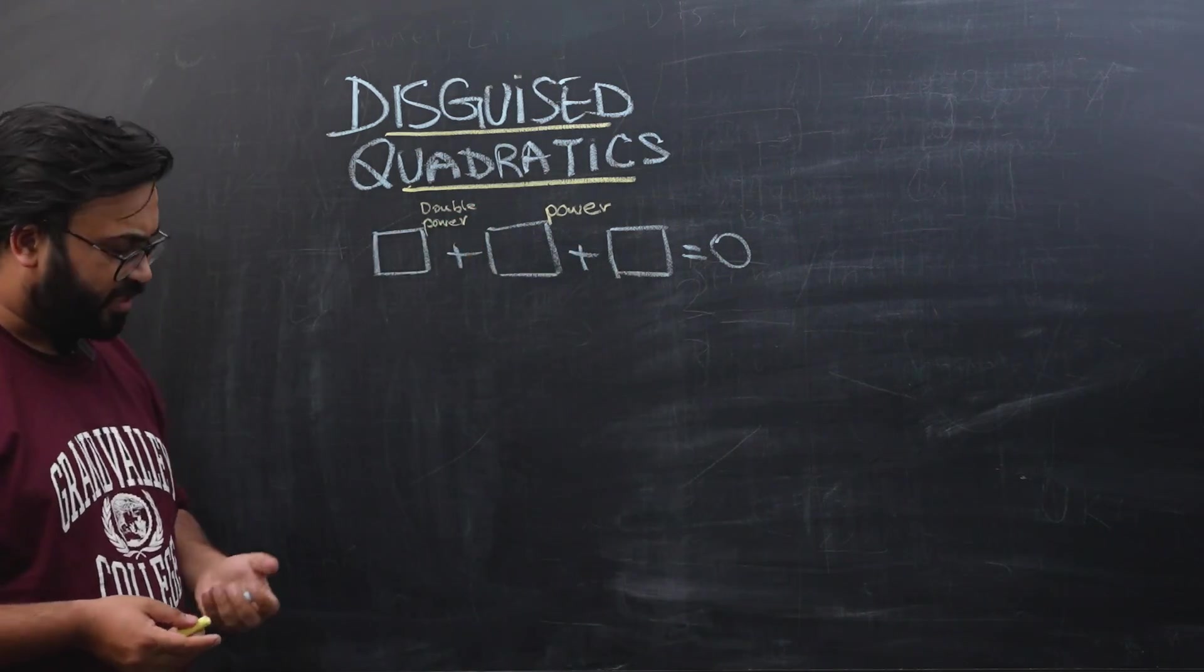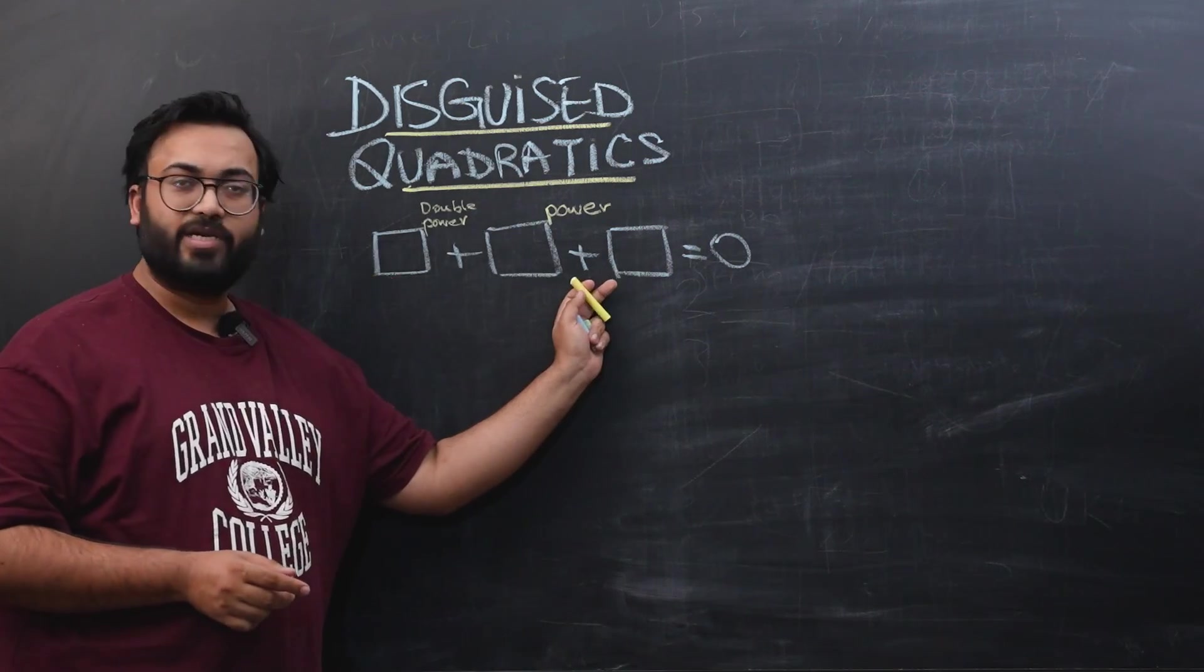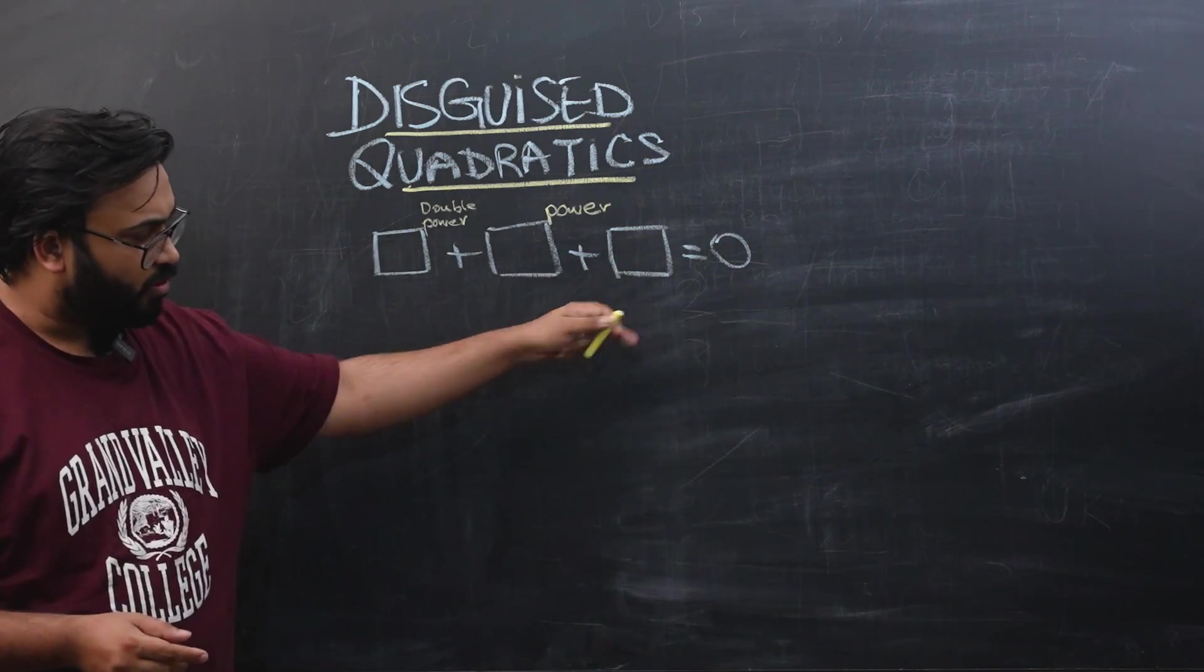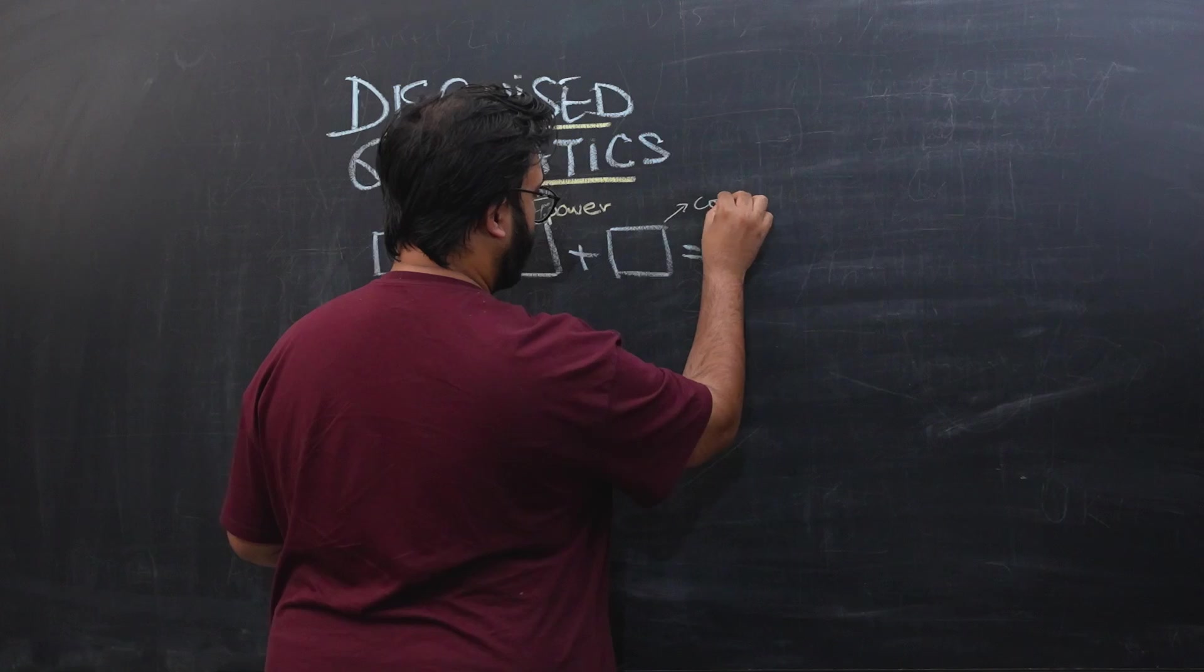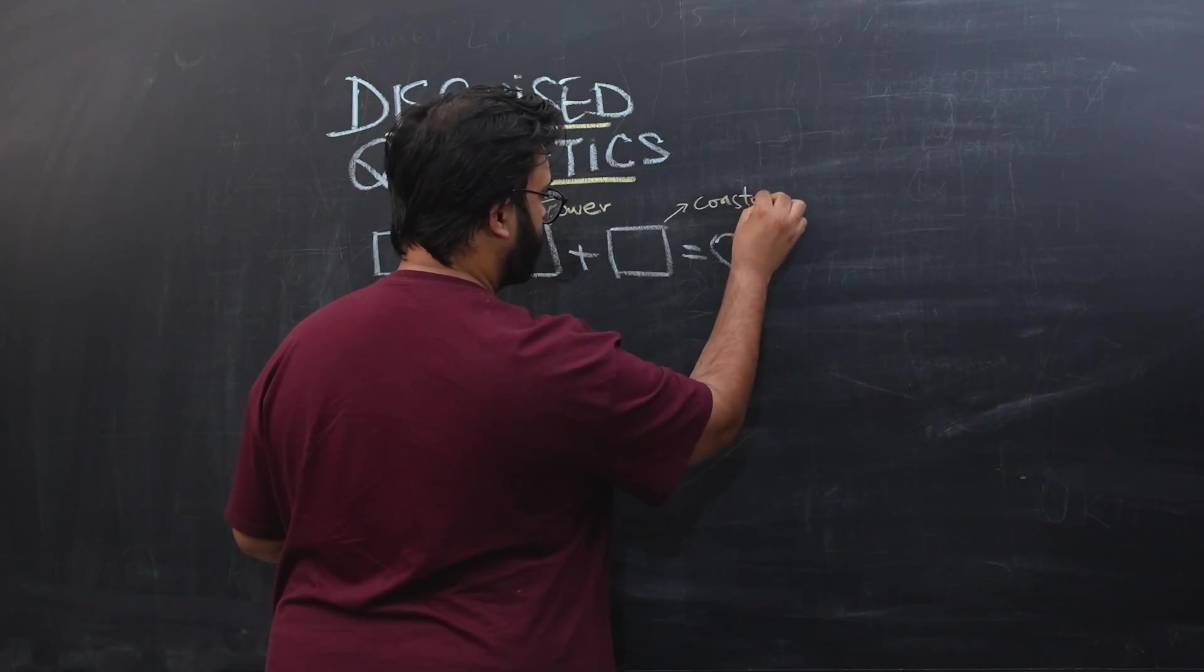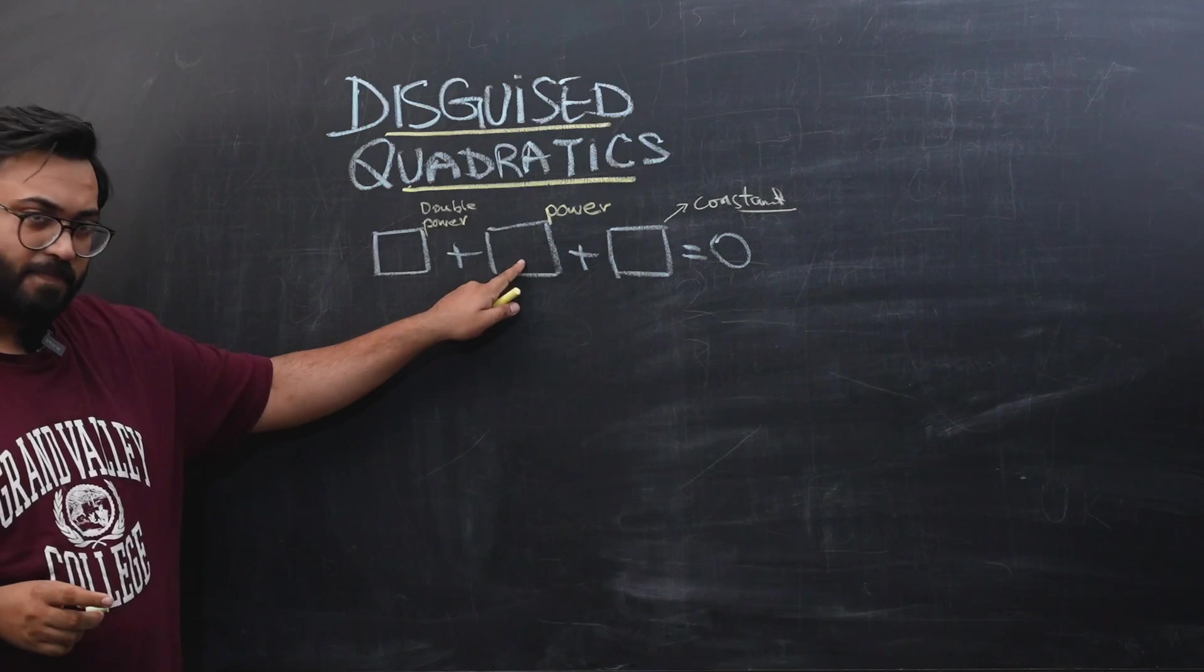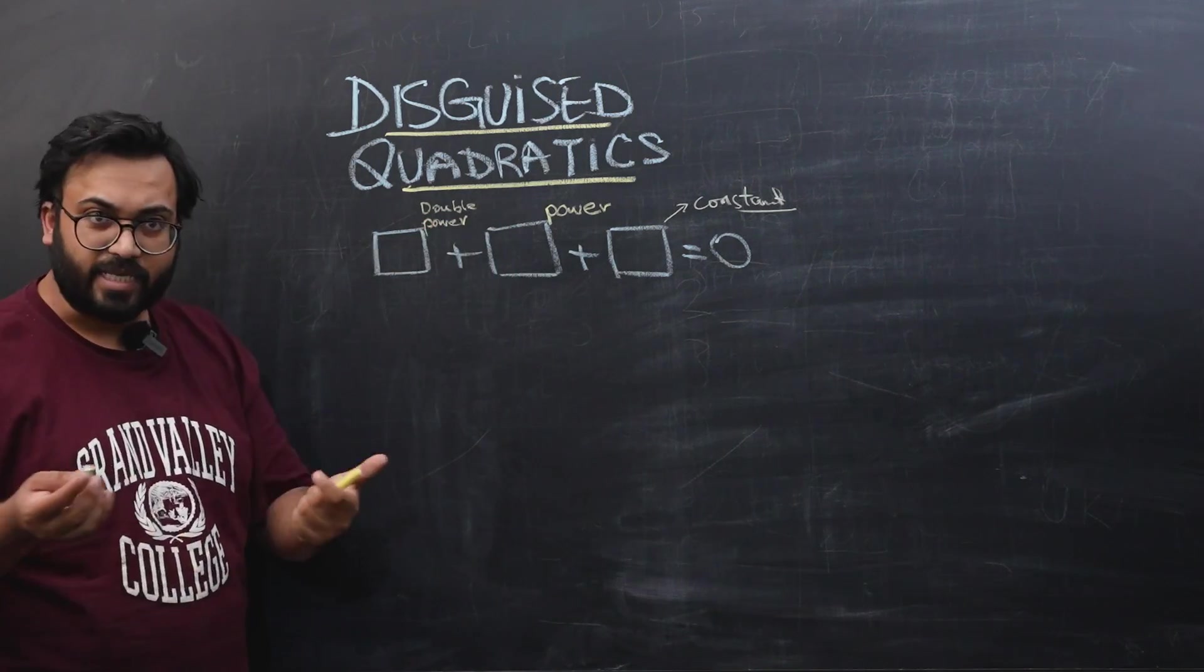The quicker you start to identify these patterns, the easier it will get for you people. It will always be a three-term expression equal to zero. The last number will always be a constant. This does not have a variable. You will have some power on the middle term, and the double of that power would be on the first term.